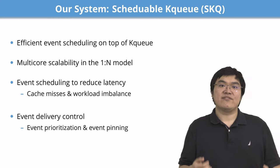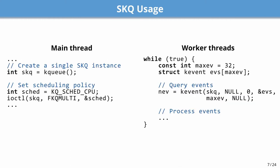Additionally, SKQ provides applications with event delivery control, such as event prioritization and event pinning. In a typical SKQ application, the main thread creates a single SKQ object and sets the desired scheduling policy. All worker threads dequeue events from the shared object in event loops. SKQ transparently schedules events across all worker threads based on the set scheduling policy. For applications already using the one-to-many model, using SKQ requires no change. For applications using the one-to-one model, developers only need to replace all private kqueue objects with a shared SKQ object.